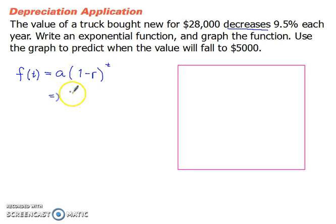So let's put in our information. We've got our starting value of $28,000. And then we have 1 minus our 9.5%, which is 0.095, as a decimal.